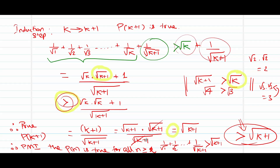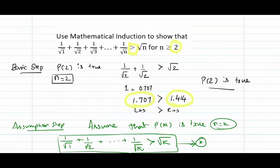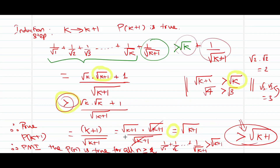Therefore, by the principle of mathematical induction, the statement p(n) is true for all values of n greater than or equal to 2. We write 2 because the basic iteration started with n equal to 2. Hence, 1/√1 + 1/√2 + ... + 1/√n > √n for all n ≥ 2 is proved by the principle of mathematical induction.